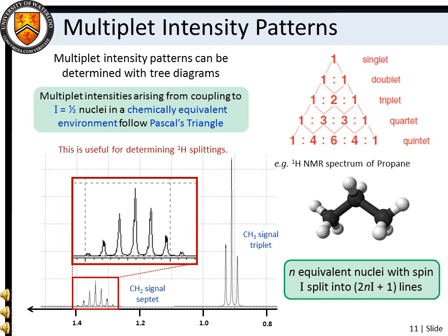Intensity patterns for nuclei with I greater than one-half are better predicted by constructing an appropriate tree diagram. Typically though, we will not be concerned with spin coupling for nuclei with I greater than one-half, since these species undergo rapid spin relaxation, and their effects are often not observed. One common exception to this rule, however, is deuterium, which has I equal to one.